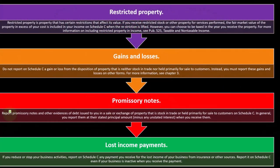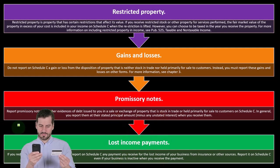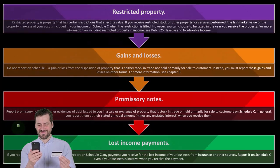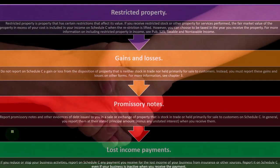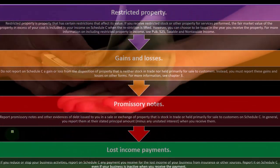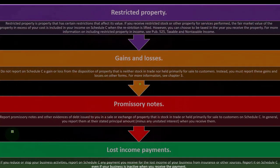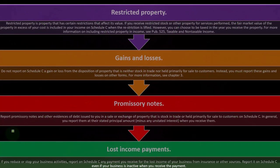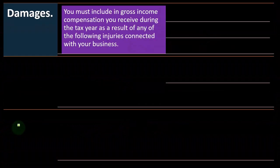Lost income payments: if you reduce or stop your business activities, report on Schedule C any payment you receive for the lost income of your business from insurance or other sources. Report it on Schedule C even if your business is inactive when you receive the payment.